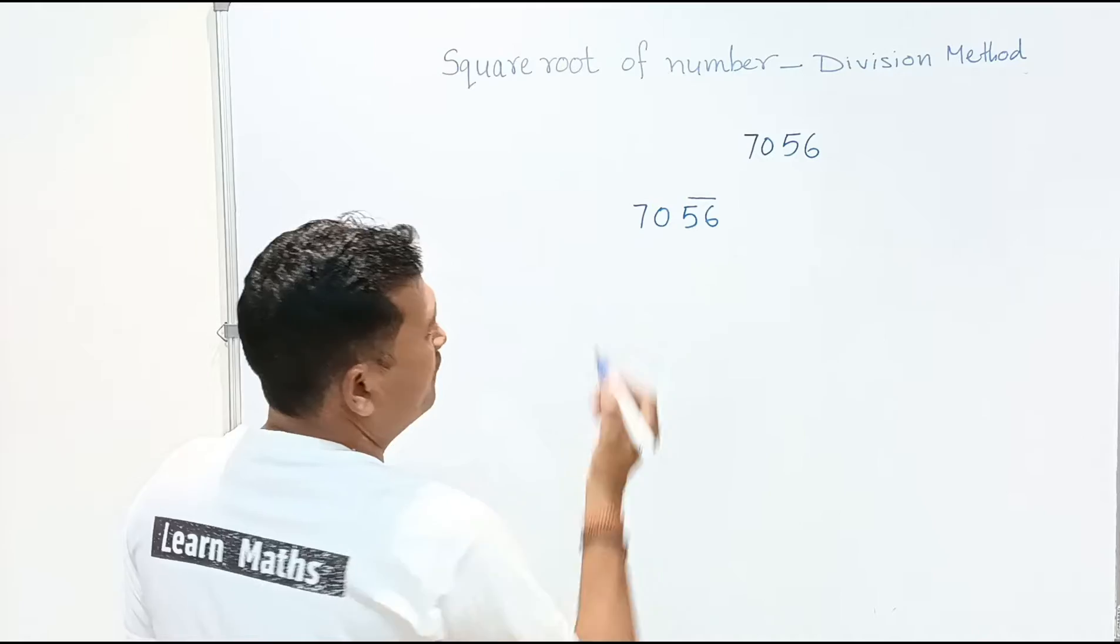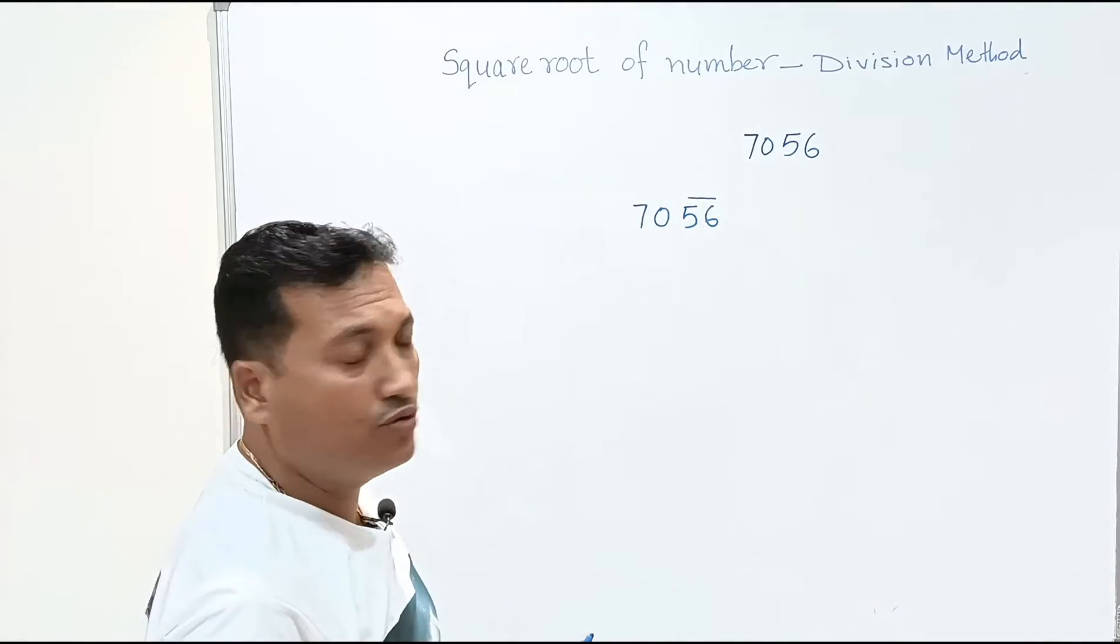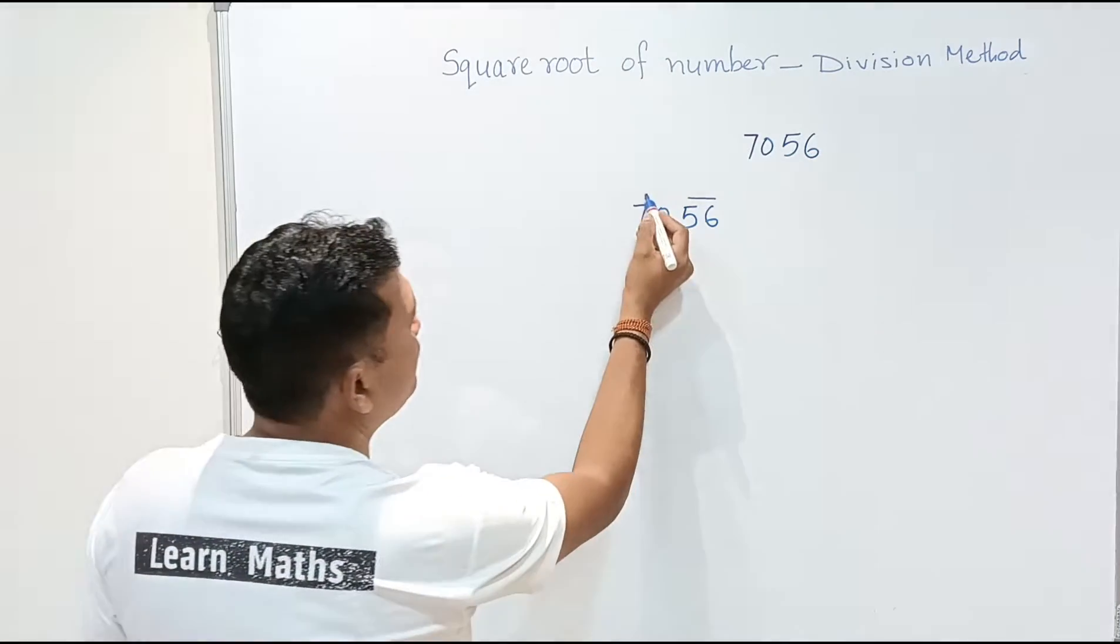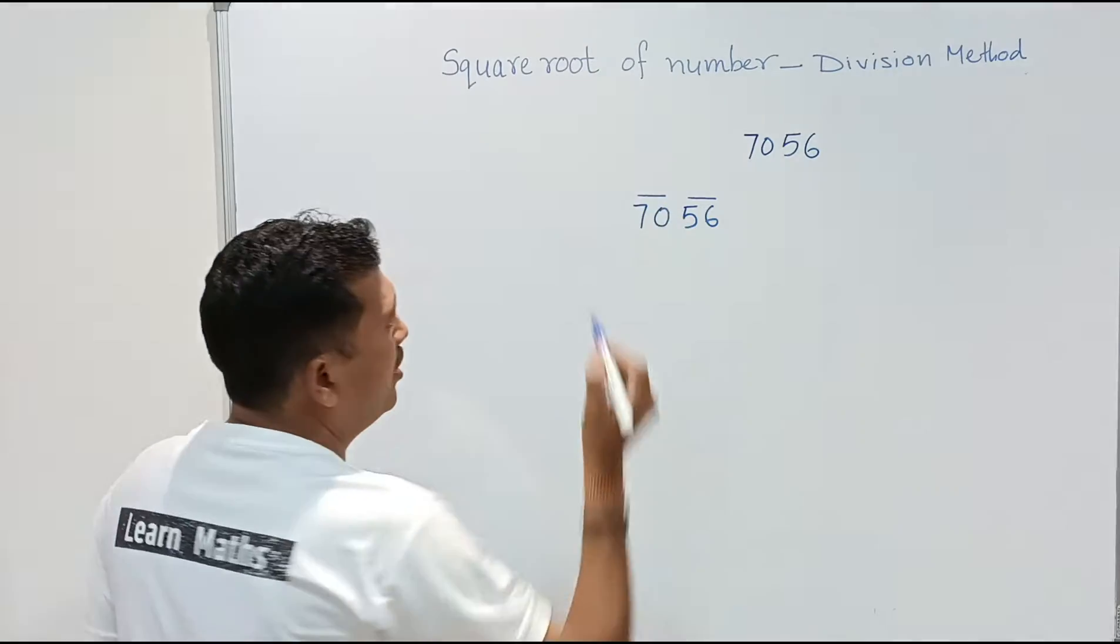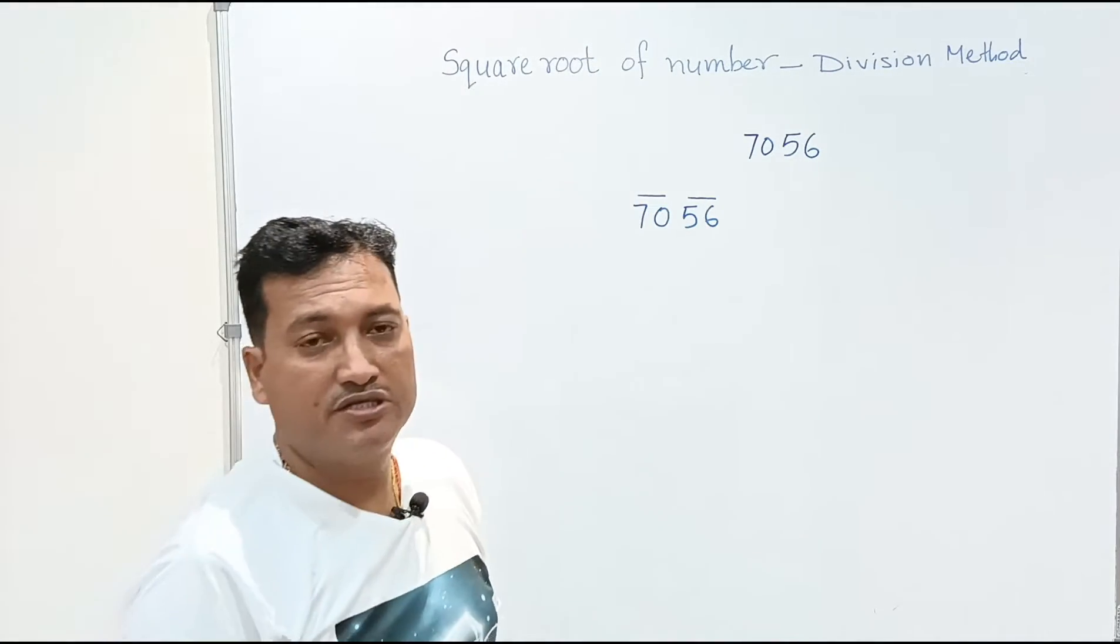You can see here 56 is one group, one pair of two-digit number and 70 is the another group.